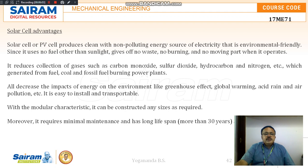A PV cell produces no pollution because no burning of any fuel, coal, or fossil fuel takes place, as it does in other power plants. Therefore, there is no greenhouse effect, global warming, acid rain, or air pollution.